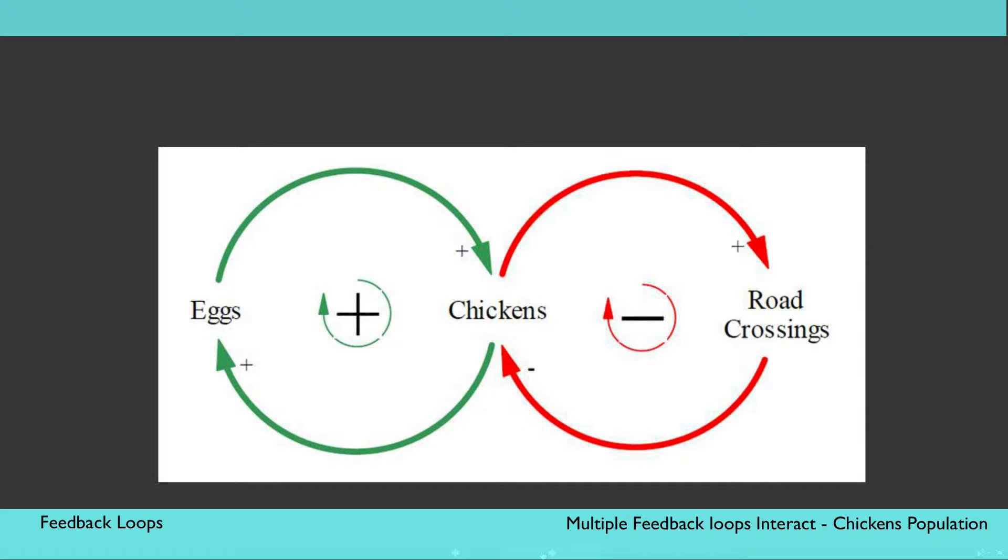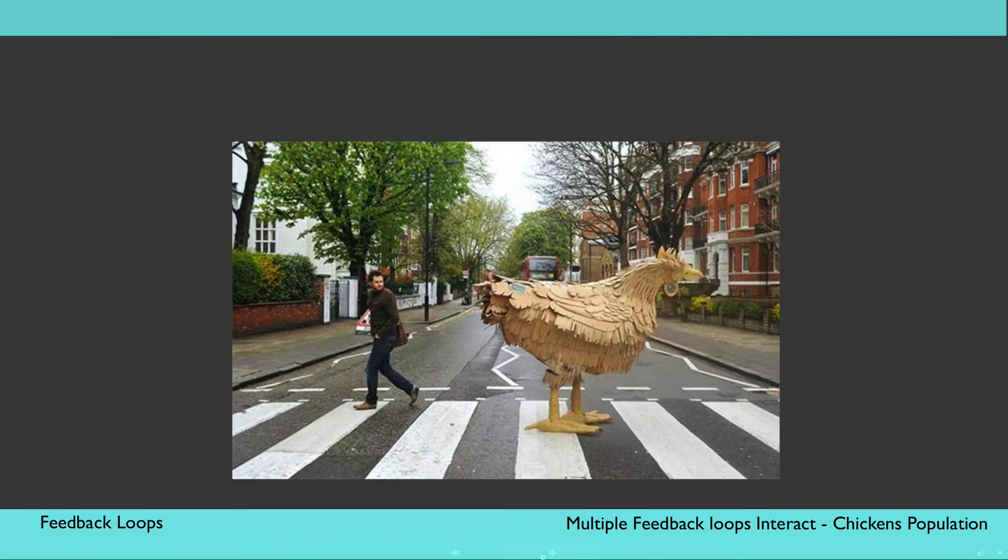However, on the right side of the diagram, a balancing feedback loop is at work. This feedback loop helps balance the chicken population, because as more chickens are born, there are more chickens trying to cross the road. But more road crossing attempts mean that more chickens will die, reducing the number of chickens. This helps us understand the broader dynamic, and why the chicken population doesn't continue to increase without any limit.